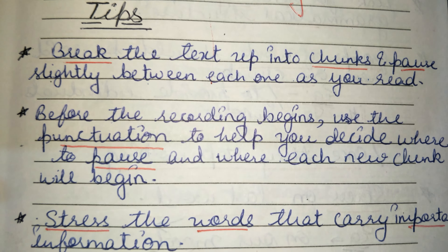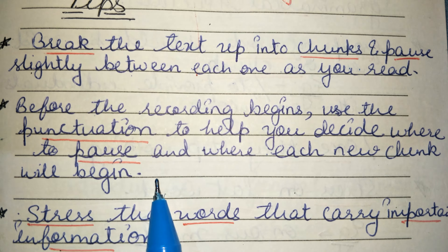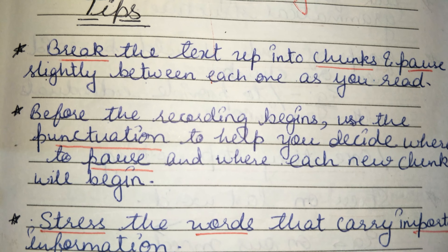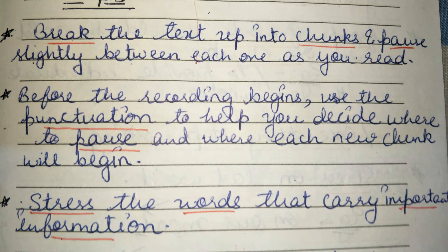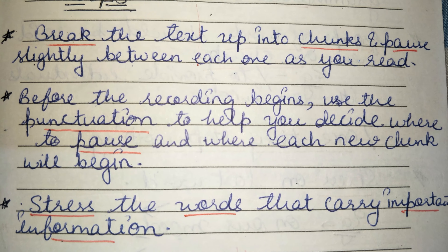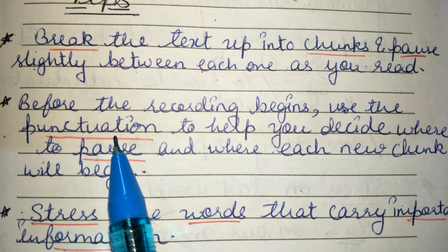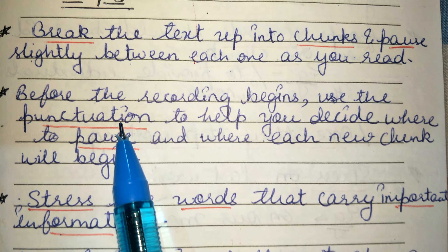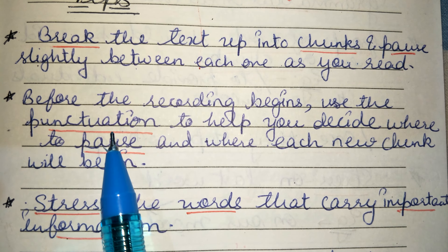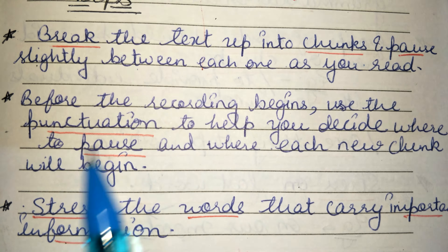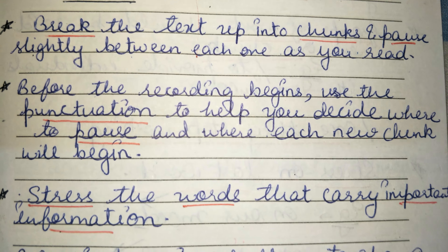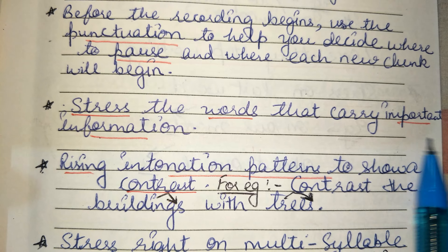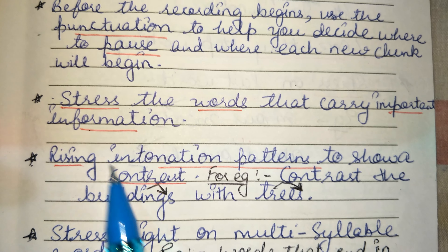The second tip: before the recording begins, use the punctuation to help you decide where to pause and where each new chunk will begin. We get 25 seconds just to read the paragraph, and we should use that time to check the punctuation — where the comma is, where the full stop is — so that we can take accurate pauses. If there is a comma, take a nanosecond pause; if there is a full stop, take a slightly longer pause.